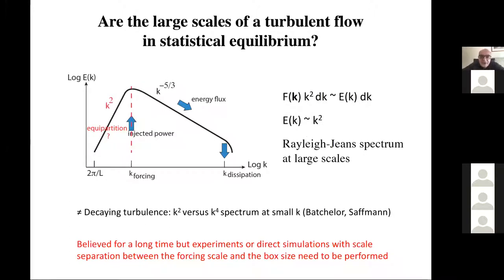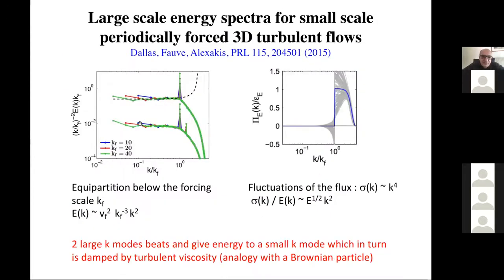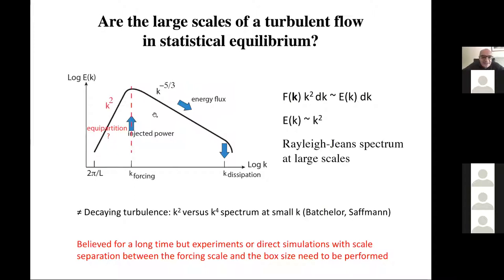The first question we can ask is: are the large scales of the turbulent flow in statistical equilibrium? The usual picture displayed when presenting turbulent flows is an energy spectrum versus spatial wave number. We have injection of energy at the forcing scale, and this energy cascades to smaller scales where it is finally dissipated. This is the usual framework of the Kolmogorov cascade, which has been studied a lot since Kolmogorov.